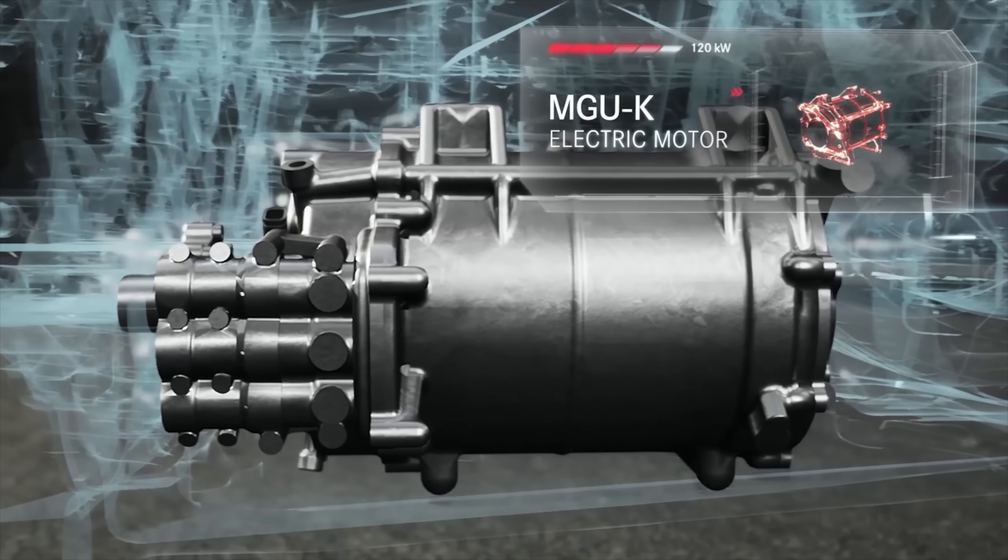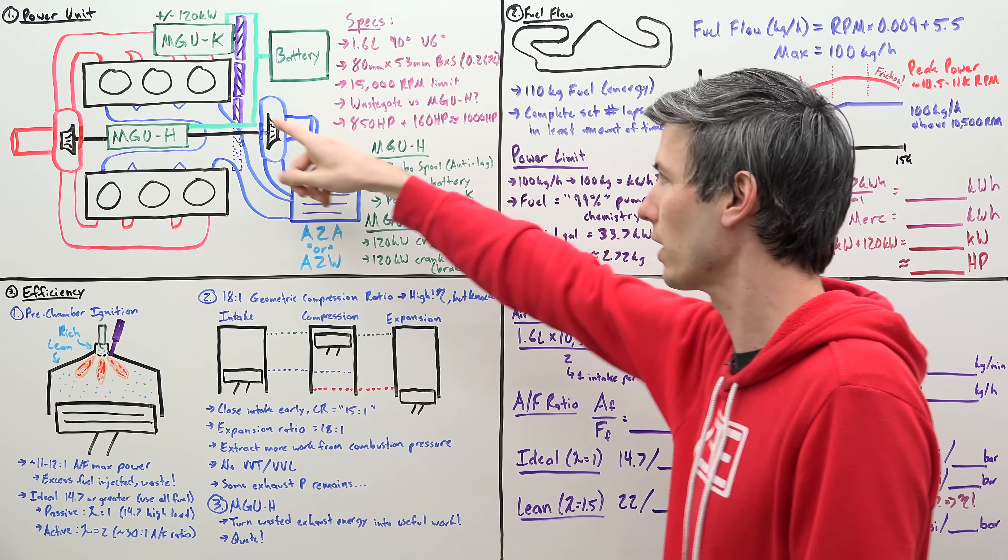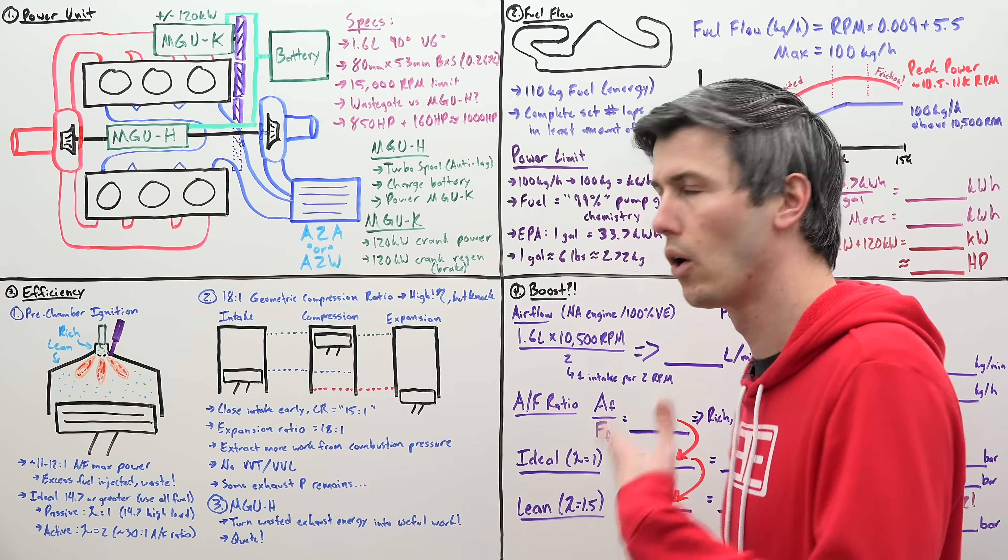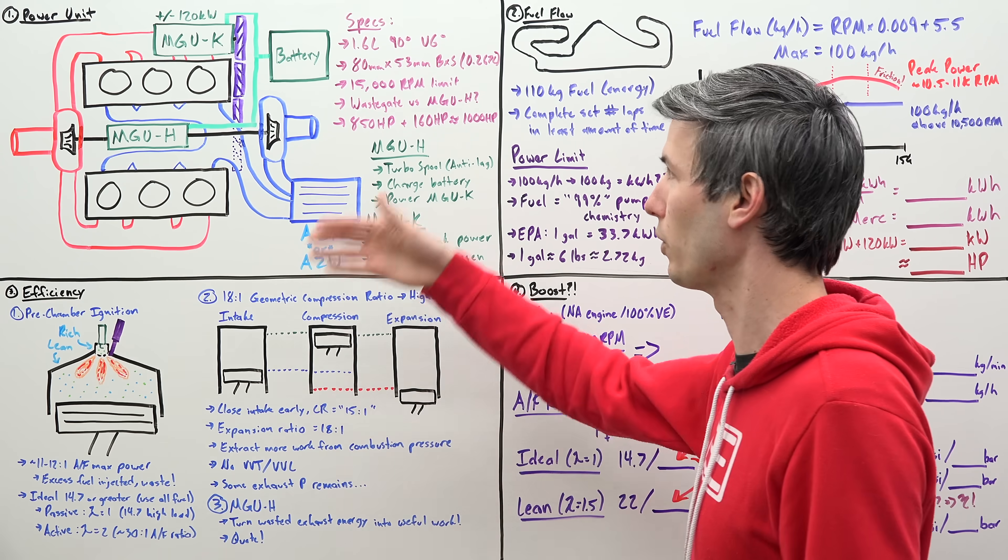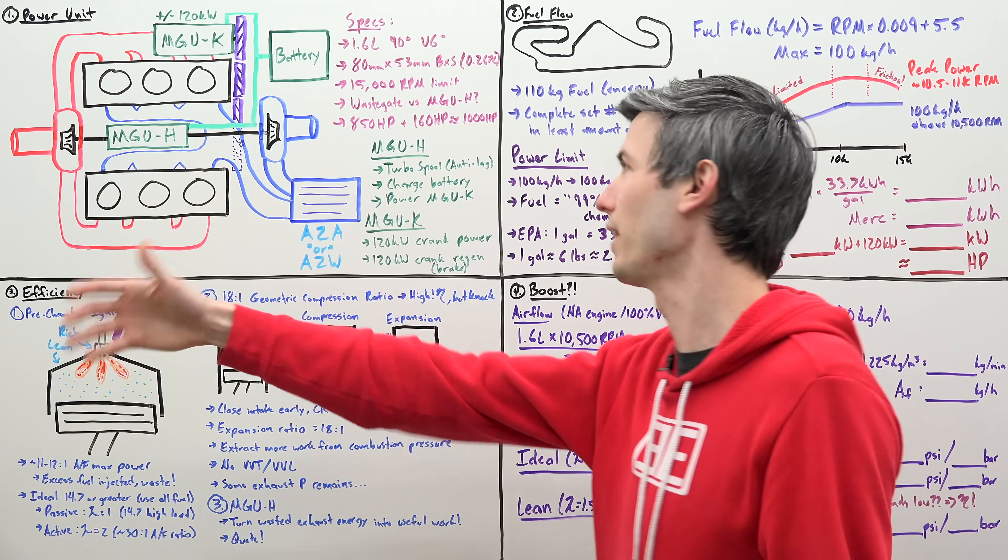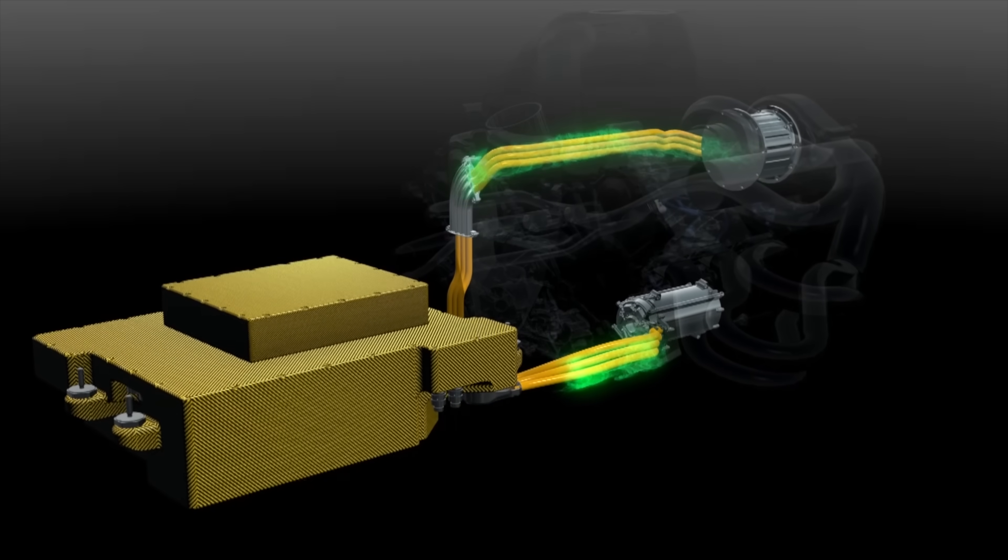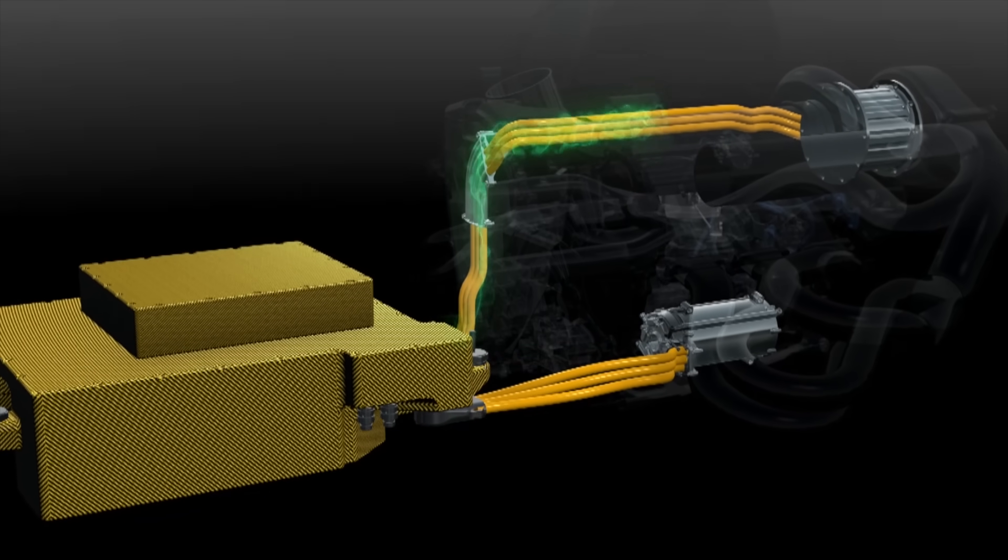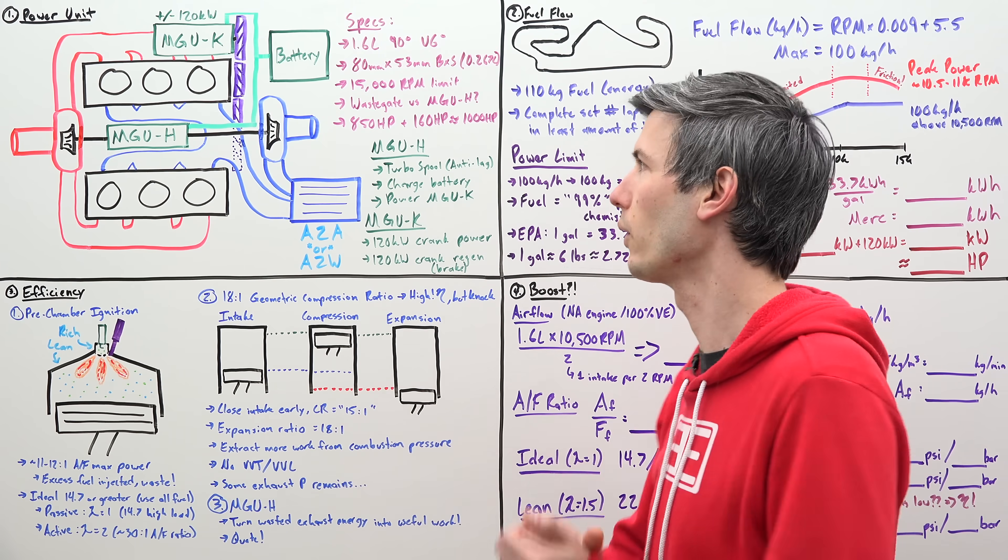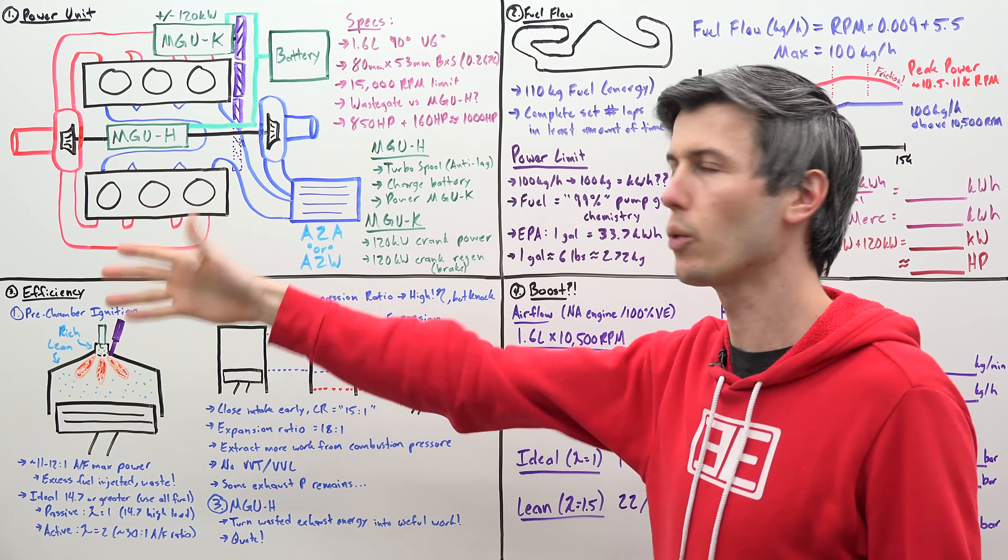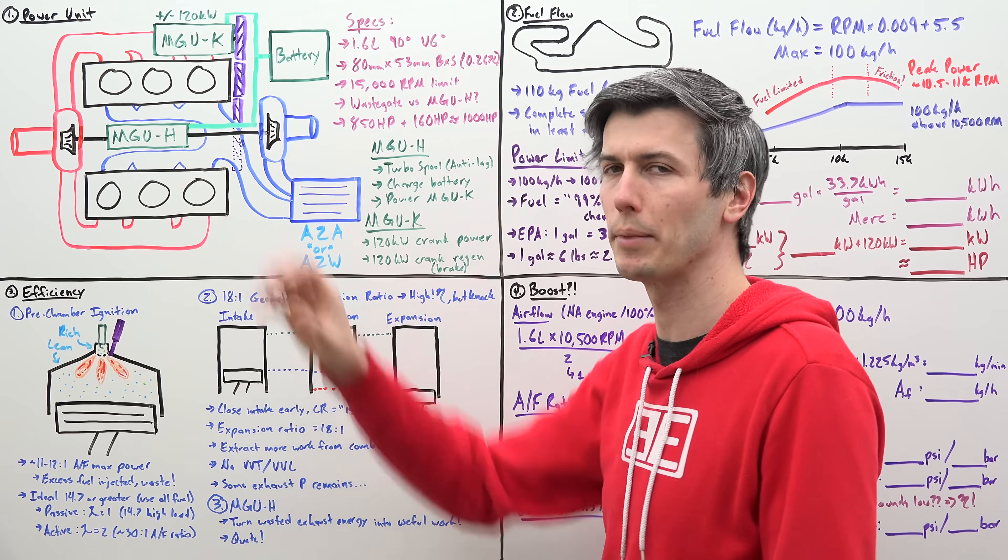Now your MGU-K has two basic functions. First of all, it can be used to send 120 kilowatts of power directly to your crankshaft, so giving you greater acceleration. Or you can use it to use basically like brakes. It can be used for regen. So negative 120 kilowatts. Or in other words, you're using the regen to send 120 kilowatts of power from the MGU-K back to the battery to save that energy for later use. So if our MGU-K is making 120 kilowatts or about 160 horsepower, that means in order to get to 1000 horsepower for the overall unit, we've got about 850 horsepower coming from the engine alone.